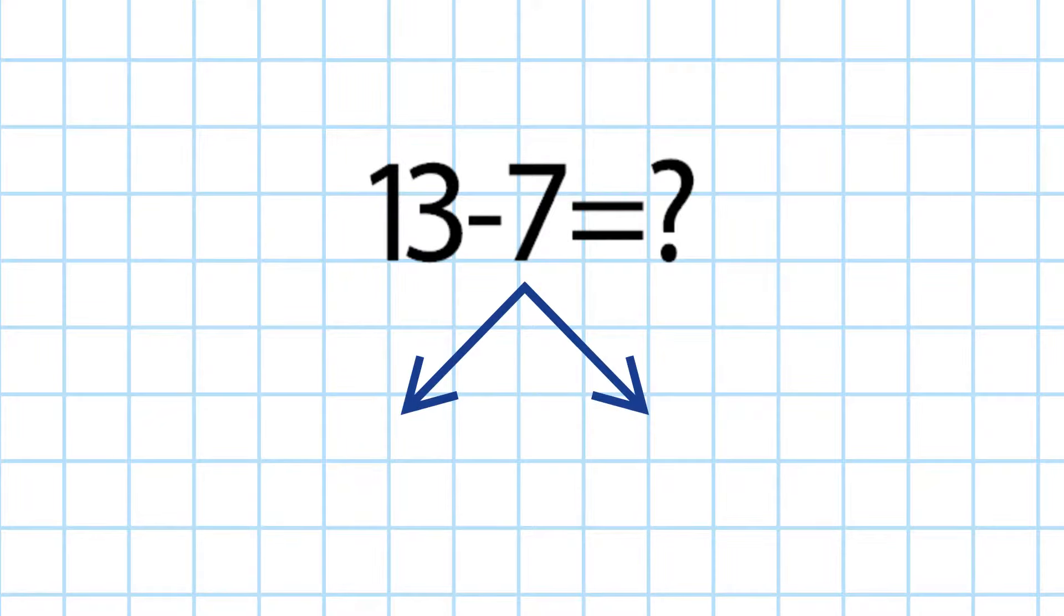Let's try another example. 13 minus 7. First, we break down 7 into 3 and 4 to make it easier to subtract the numbers.